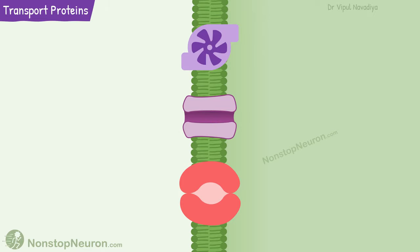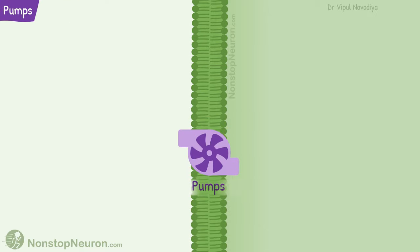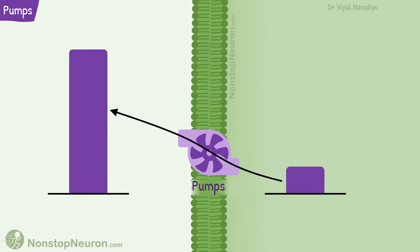There are three main types of transport proteins: pumps, channels, and carriers. Let's see each type one by one. First, pumps. Their specialty is to move substances uphill against their electrochemical gradient. For this, they use energy from ATP.